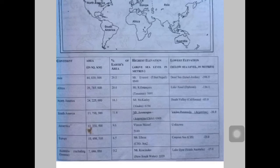Australia, which includes Oceania countries and small islands: the highest elevation point of this continent is Mount Kosciuszko in New South Wales, and the lowest elevation point is Lake Eyre in South Australia.